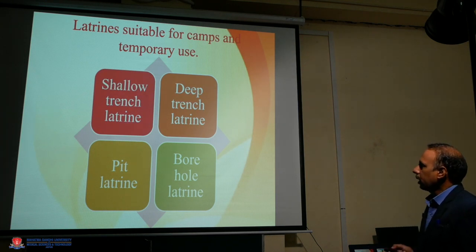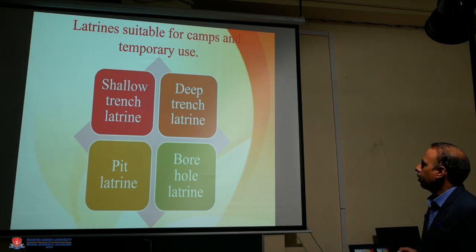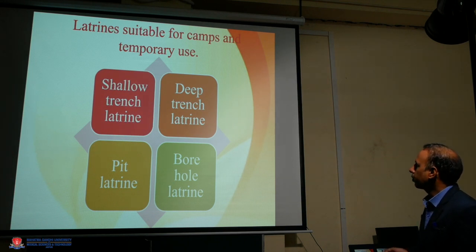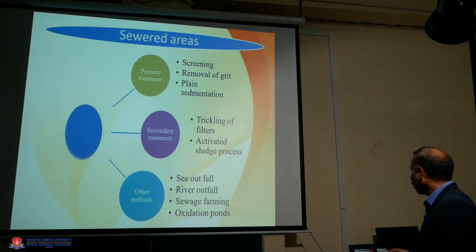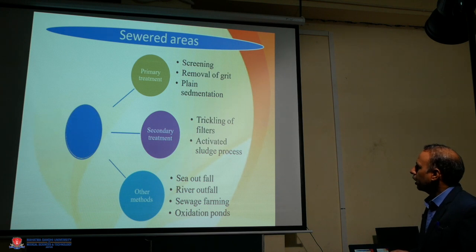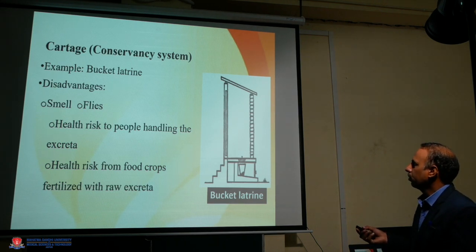Latrines suitable for camps and temporary use include: shallow trench latrine, deep trench latrine, pit latrine, and borehole latrine — so four types for camps. The sewered area system includes primary treatment, secondary treatment, and the conservancy system, which is the service type latrine.